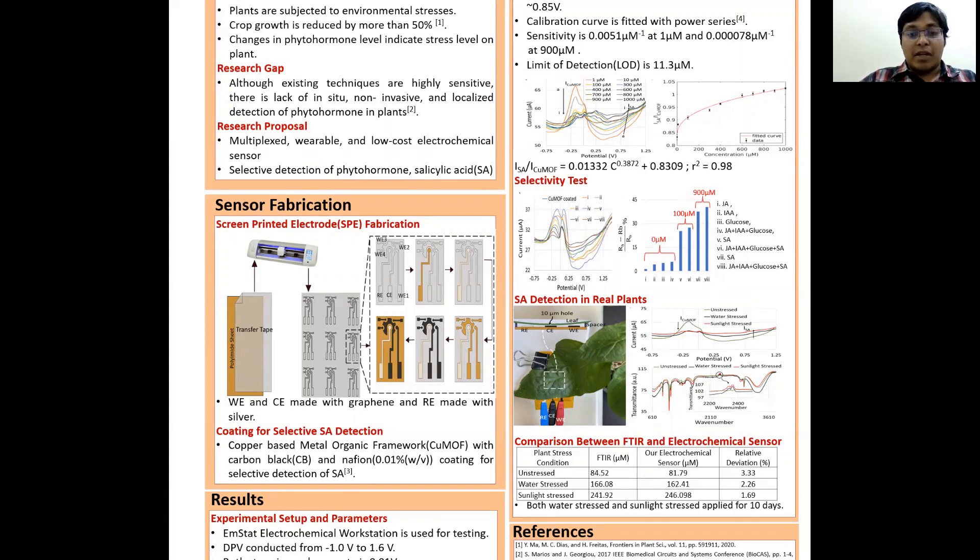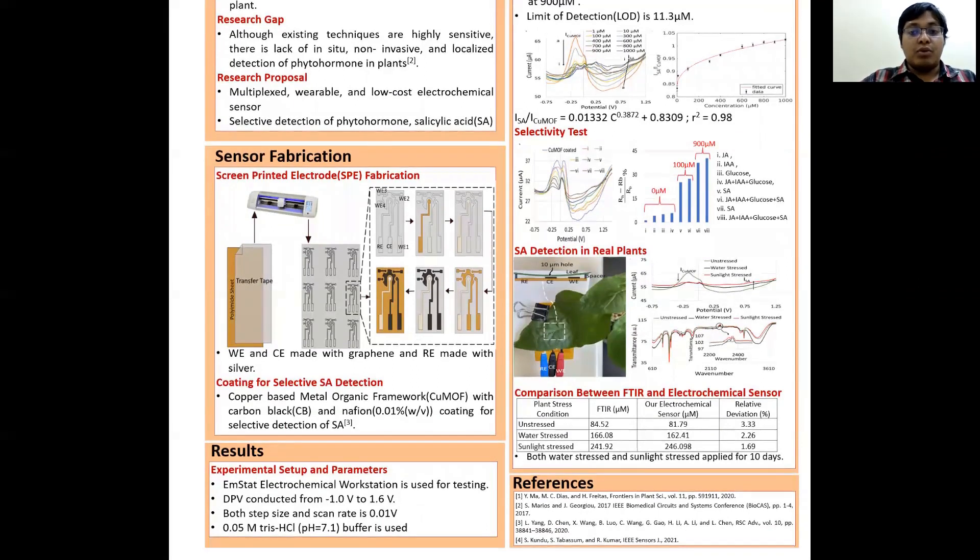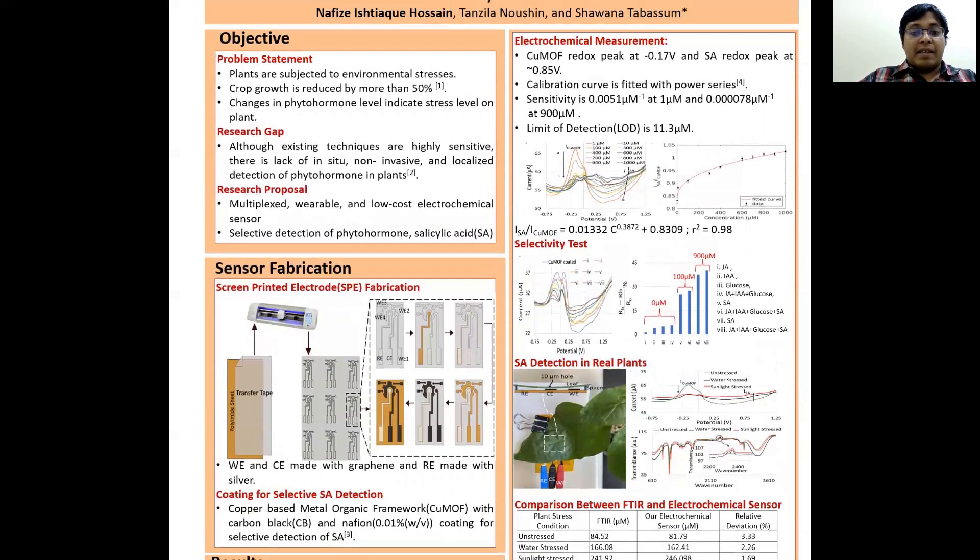Differential pulse voltimetry was conducted from minus 1 volt to plus 1.6 volt at a standard of 0.01 volt using 0.05 molar tris HCl buffer of 7.1 pH. From DPV test, we can see that COOMF redox peak at minus 0.17 volt, while the salicylic acid redox peak around 0.85 volt. The ratio of the salicylic acid peak current and the COOMF peak current is used for salicylic acid detection.